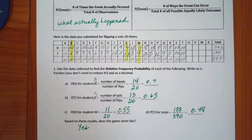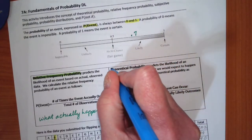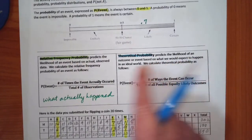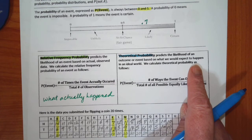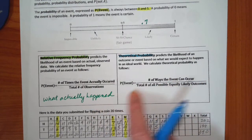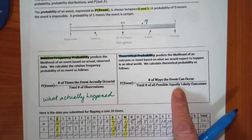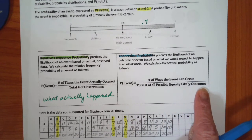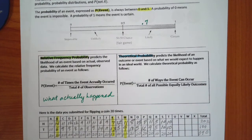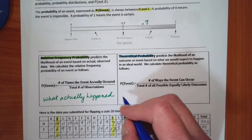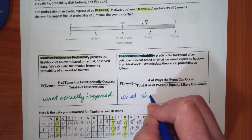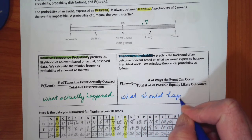Let's talk about the difference between relative frequency probability and theoretical probability. Theoretical probability predicts the likelihood of an outcome based on what we would expect in an ideal world, or if you could do an infinite number of trials — it's the number of ways an event can occur divided by the total number of equally likely outcomes. The easy summary: relative frequency is based on what actually happened; theoretical is based on what should happen in a perfect world.